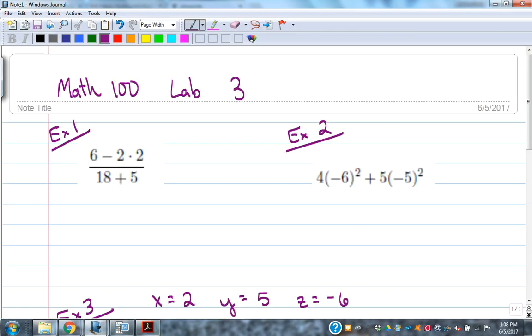Math 100 Lab 3: looking at some order of operations problems and how to incorporate use of the graphing calculator. Remember that with order of operations you want to follow PEMDAS - parentheses, exponents, multiplication, division, addition, subtraction. Grouping symbols like parentheses should be done first, followed by exponents, multiplication and division done left to right, and then addition and subtraction done left to right.